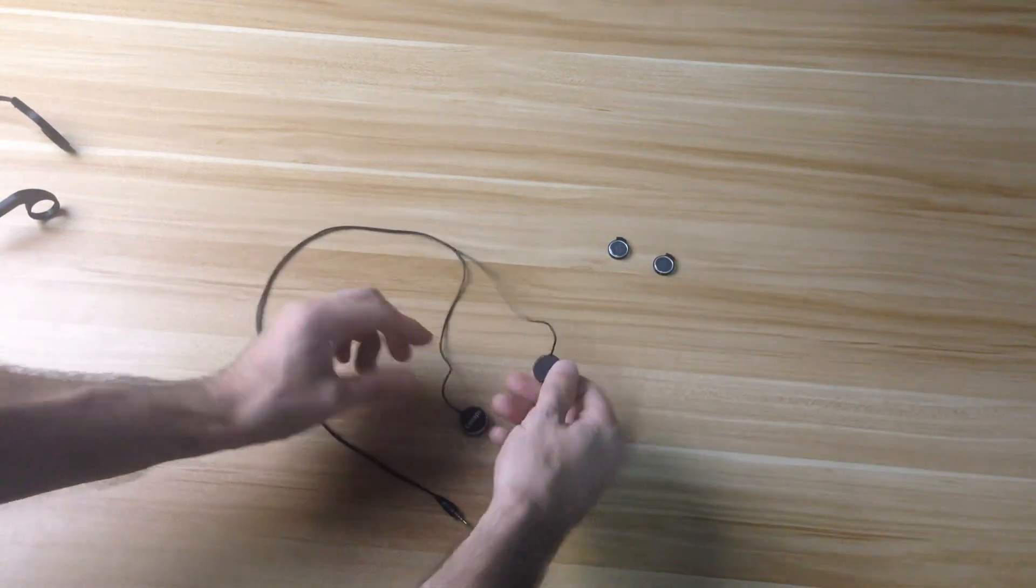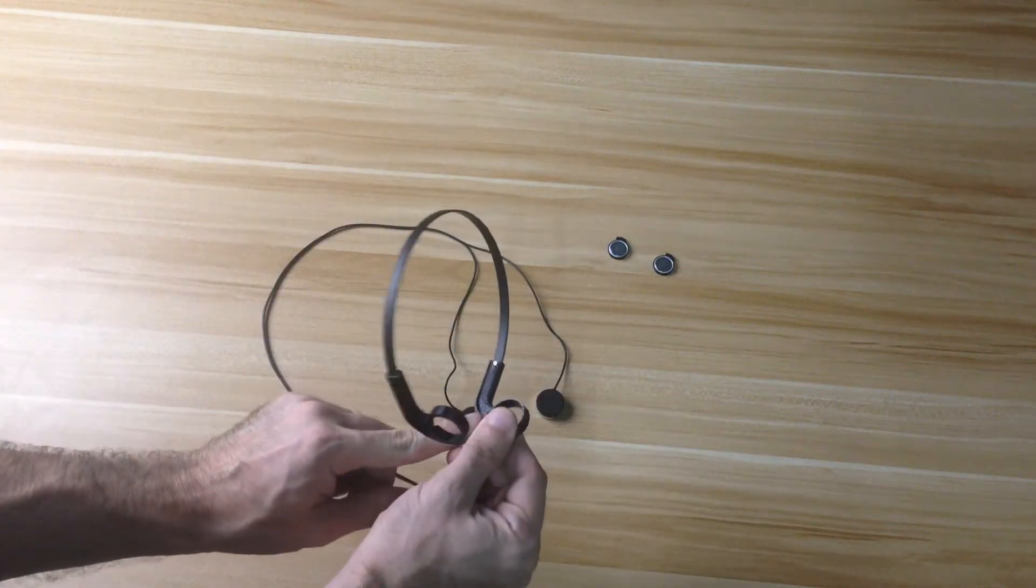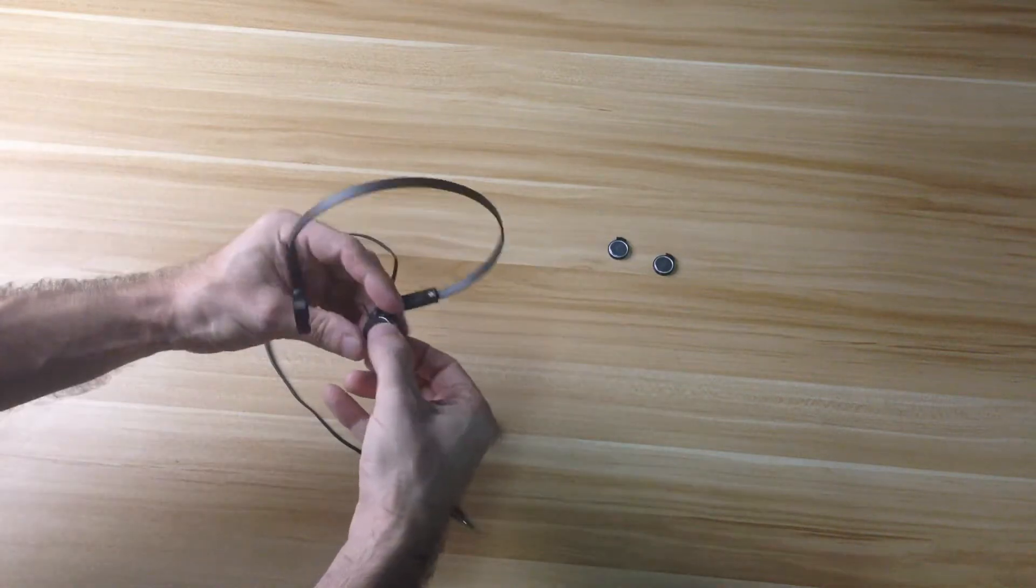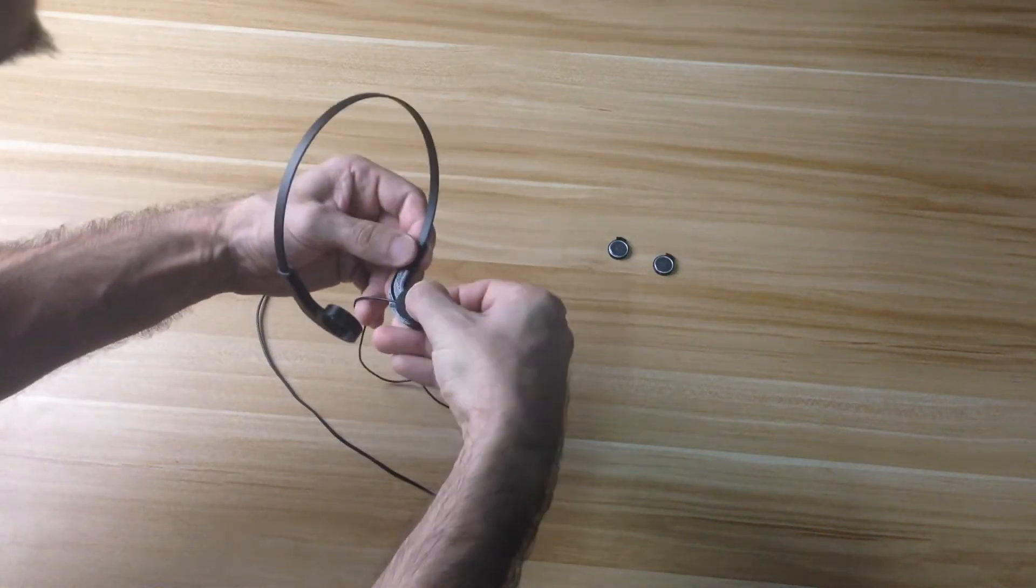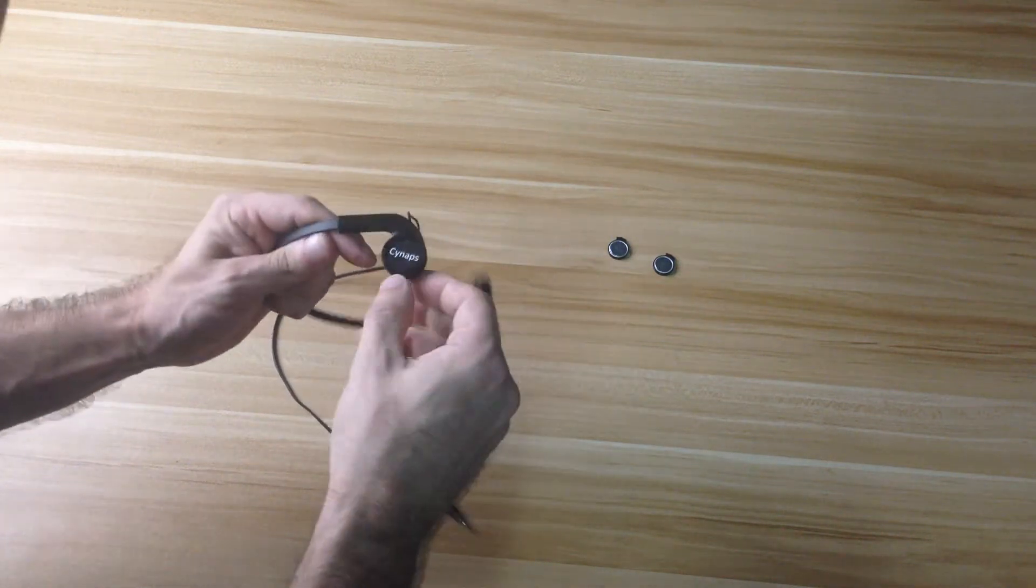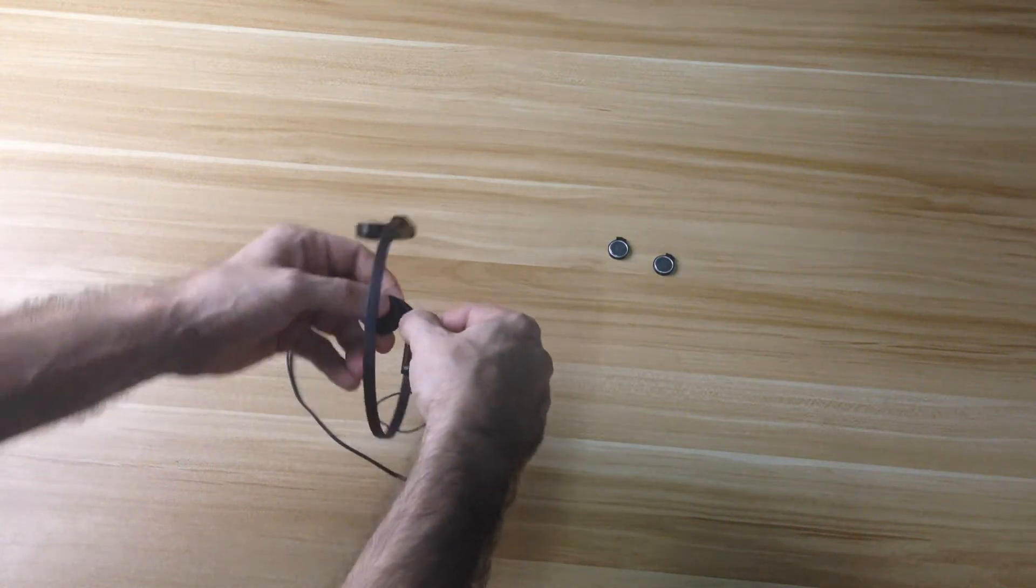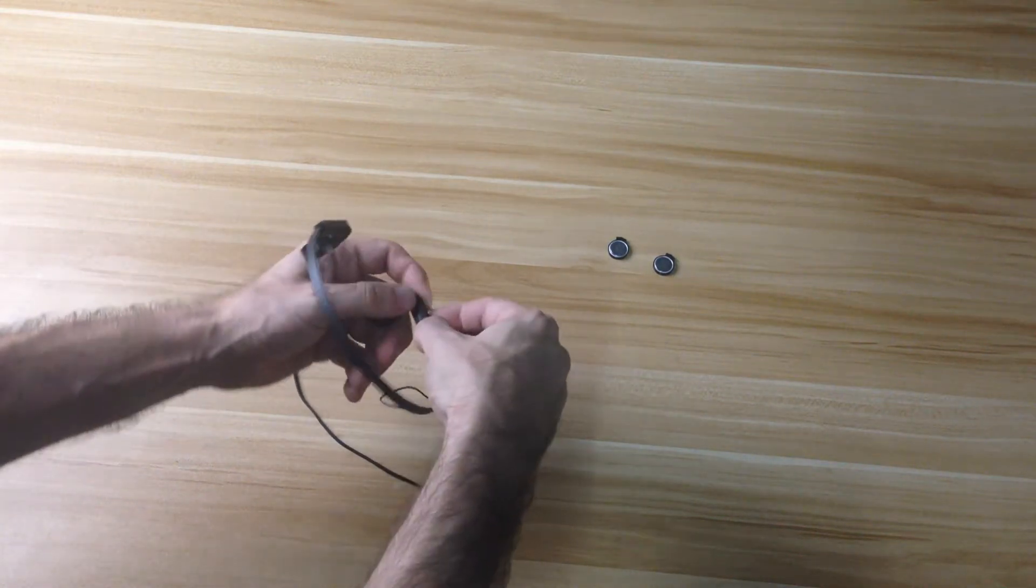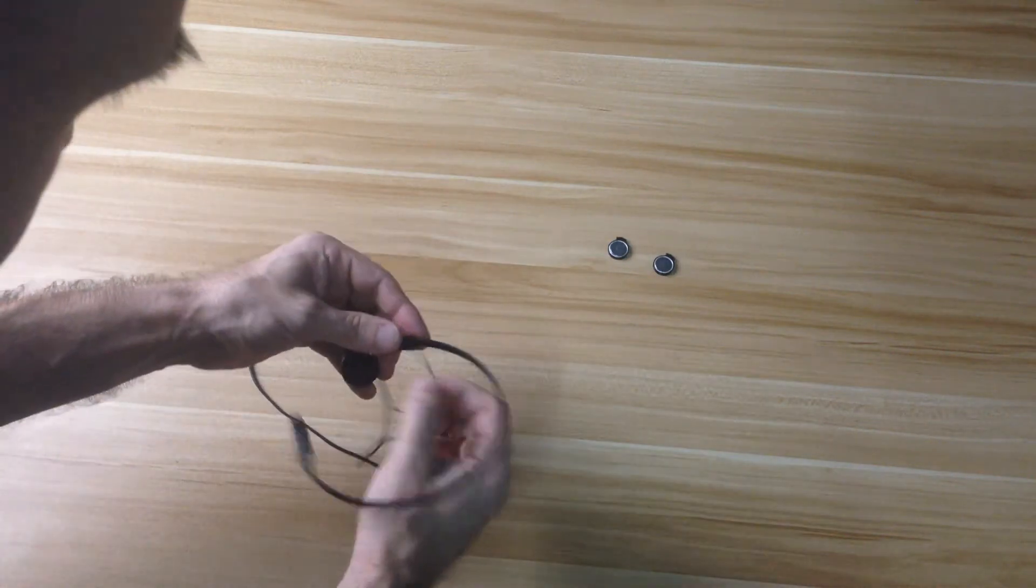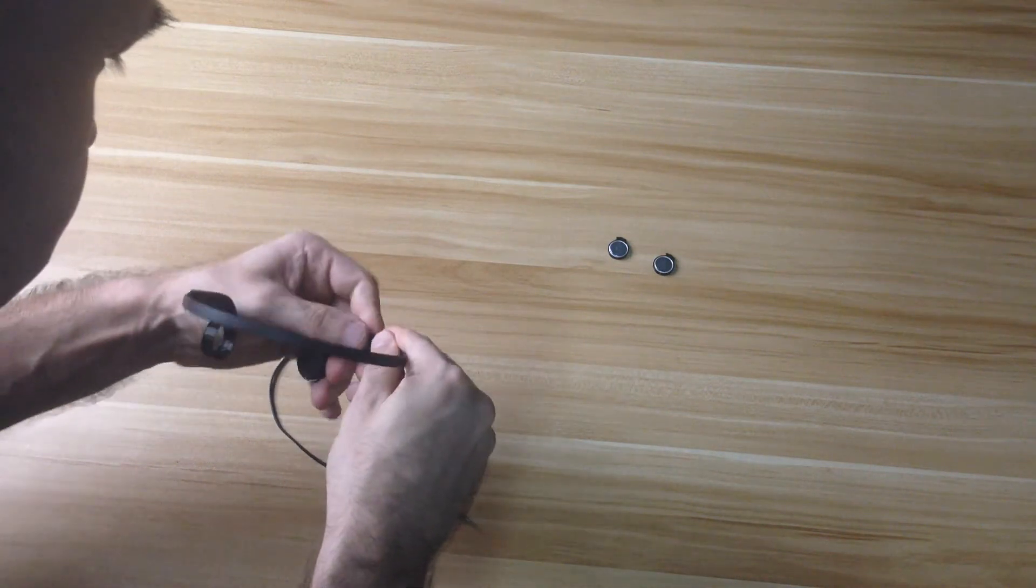All right, now you want to line the cable up with the notch in the headset. Just kind of fit it in there. Now this is a tight fit so it won't fall out but it's easy to install. And you just kind of want to follow the notch along here and just put the wire inside. Just like that.